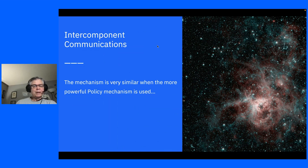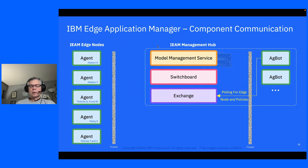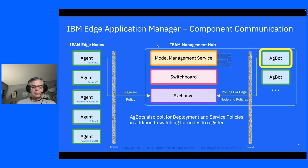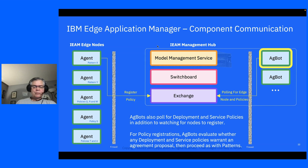We use a similar mechanism when the more powerful policy mechanism is used. For policy, the AgBot is polling the exchange like before, but this time it's looking not just for edge node registrations but also for policies. When the agent registers with a particular policy, the AgBot will evaluate whether any deployment and service policies in the exchange warrant an agreement proposal with the agent, and then proceed the same way as with patterns.